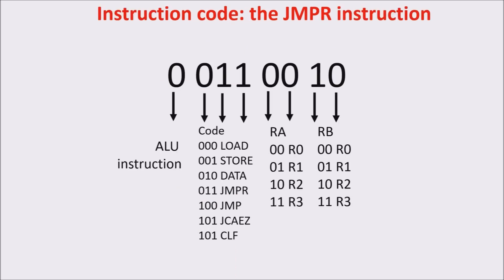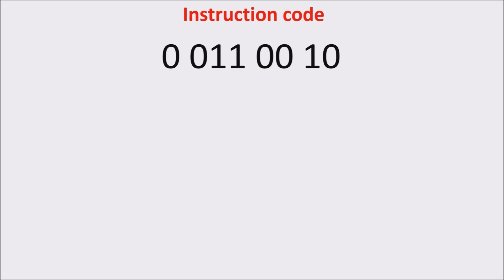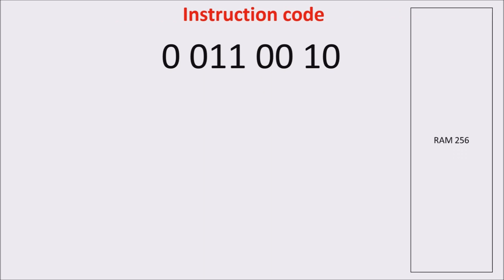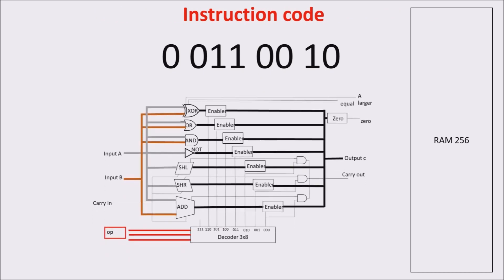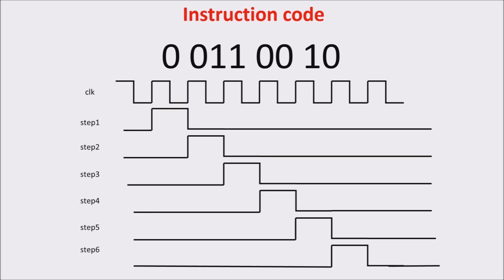We see here an example of unconditional jump. This jump instruction is used to jump to an address contained in R2, or more generally, jump to the address in Rb. We have already built some important components of Scott's CPU: the RAM memory, the ALU, and we are building the control unit. At the heart of the control unit there is the stepper, which gives the right sequence to all the operations. As we saw in the previous video, we have six steps.